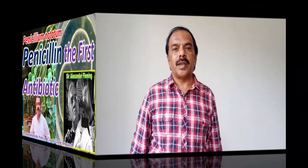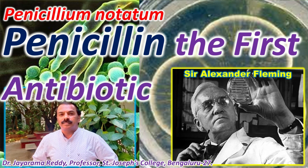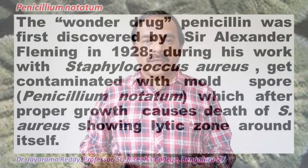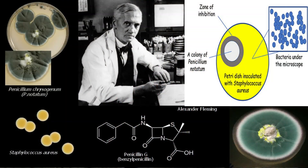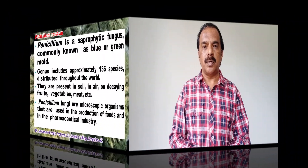Welcome to a new video on a very famous fungus called Penicillium. Penicillium is the fungus from which the first antibiotic penicillin was extracted by Sir Alexander Fleming. It is a large genus with about 136 species distributed all over the world.